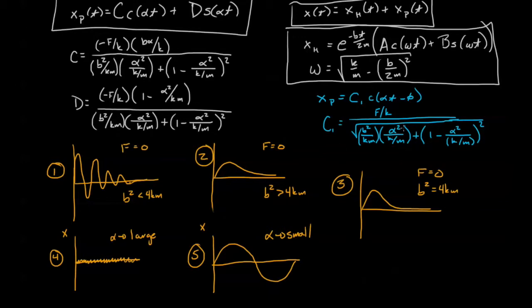Again, we expect that as alpha gets smaller and smaller, this term is going to want to go to zero. This term is going to want to go to one. So we end up with an amplitude that gets closer and closer to F over K.